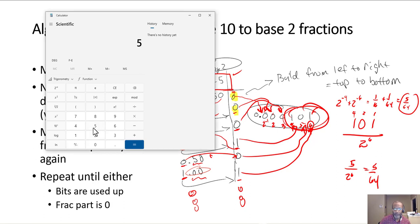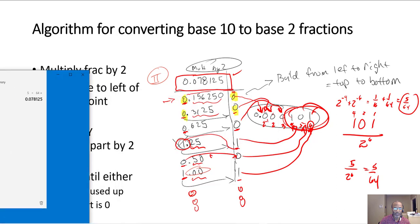So does it work out? Take your calculator and double-check, 5 divided by 64 is 0.078125.